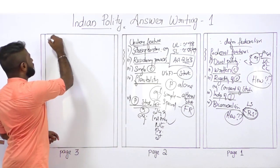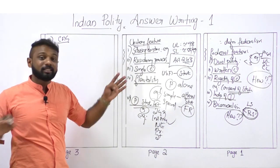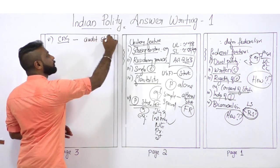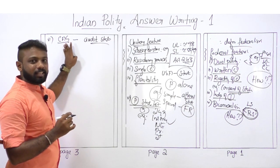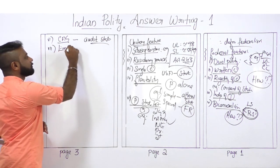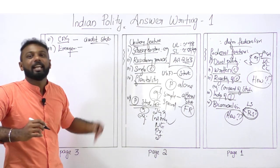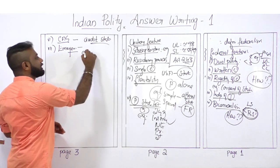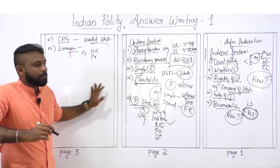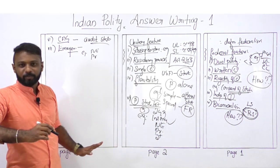Another unitary feature is the office of the CAG (Comptroller and Auditor General) — appointed by the center, but the CAG also audits the accounts of states, meaning a central agent audits state accounts, showing a centralizing tendency. Emergency provisions are also a unitary feature: during an emergency, the center becomes more powerful even without an amendment — for example, national emergency or President's Rule.